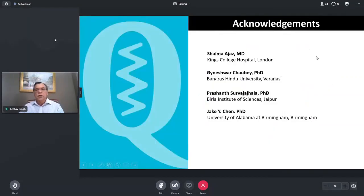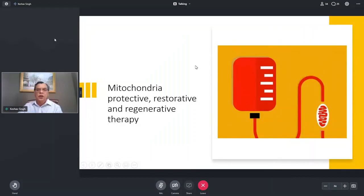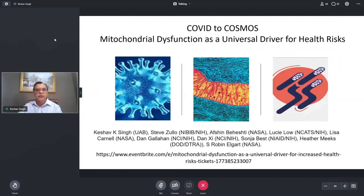So I want to acknowledge the people who did the work. Saima Ajaz as I mentioned she was a key player in the patient study. Ganeswar and Prashant helped me with the first paper and we continued to do some extra work on COVID and Jack Chen in my department helped us with the bioinformatic analysis early on. So what I want to end up with is if we can develop a way to protect mitochondria or restore or regenerate we can get ahead in the COVID-19 pathogenesis.